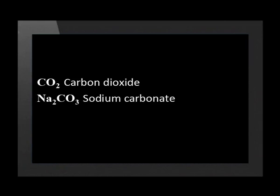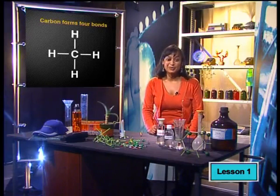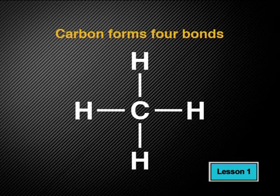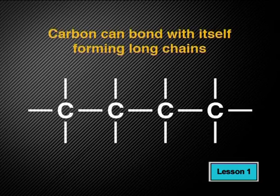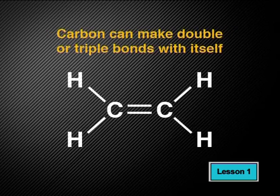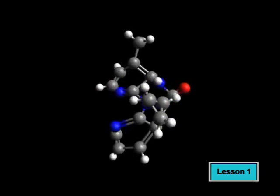There are a few compounds that contain carbon that are actually inorganic — for example, carbon dioxide CO2 and carbonates such as sodium carbonate. Now let's look at the characteristics of organic molecules. Each carbon atom can form four bonds. Carbon can bond with itself to form long chains and rings. Carbon can also make double or triple bonds with itself, and it can form ring shapes. Many lengths and shapes of carbon chains can be formed because of these characteristics.